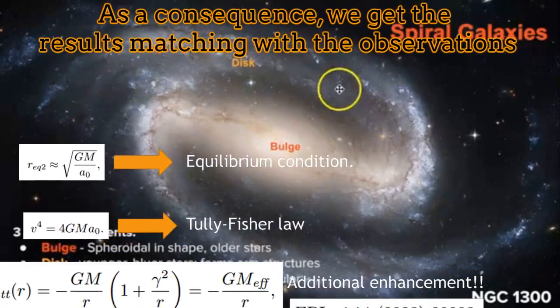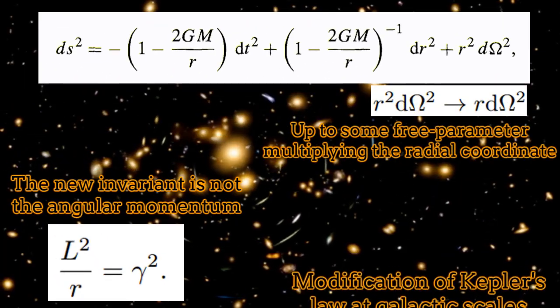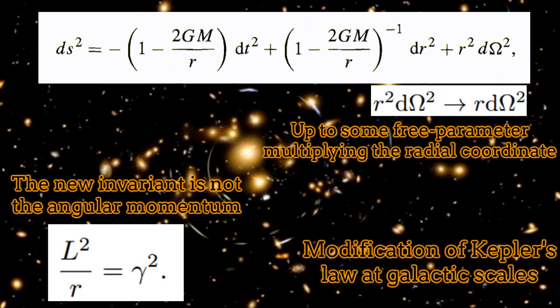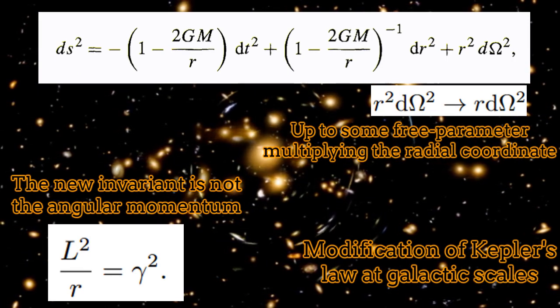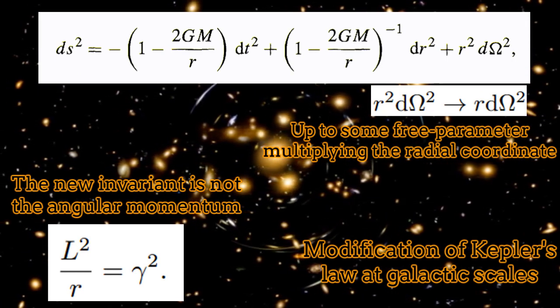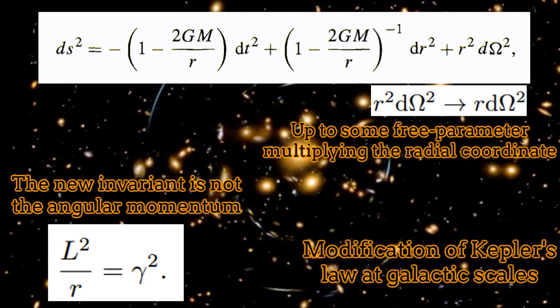By considering the new invariant inside the same theory of general relativity, the paper was able to reproduce the scales of dark matter and the effects attributed normally to dark matter. It is evident that the new invariant is not the angular momentum, although it is related to it. The existence of the new invariant is equivalent to a modification of Kepler's law.